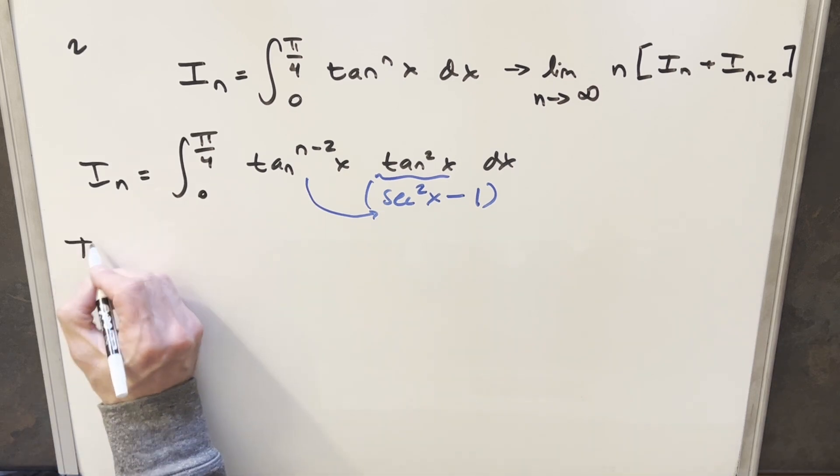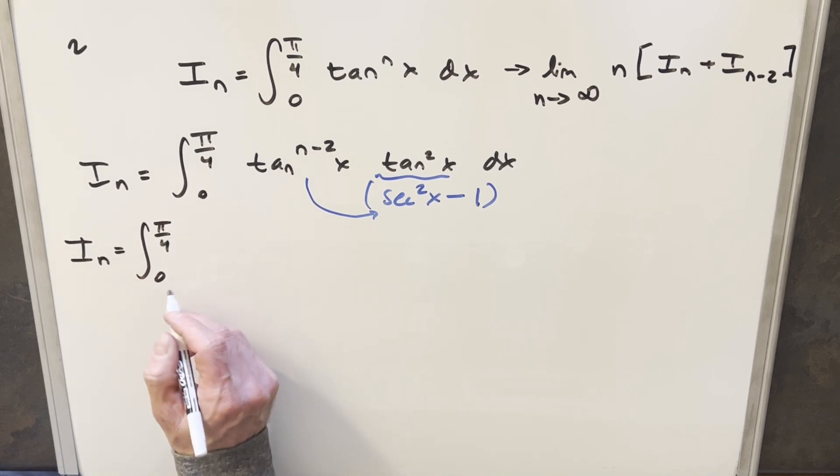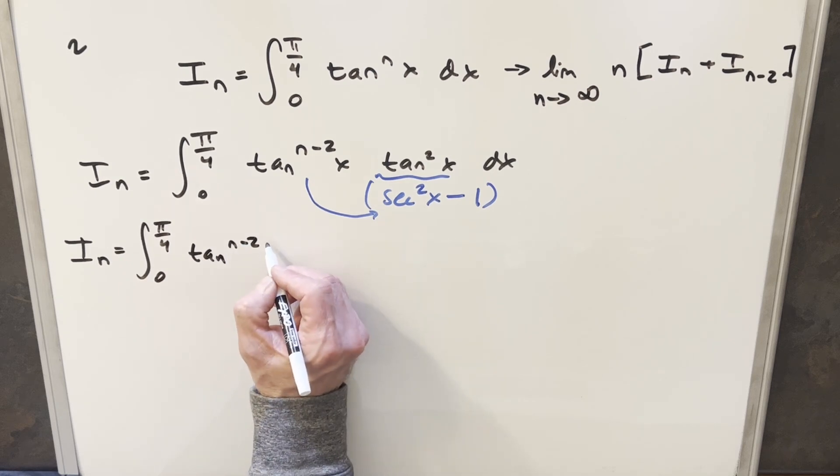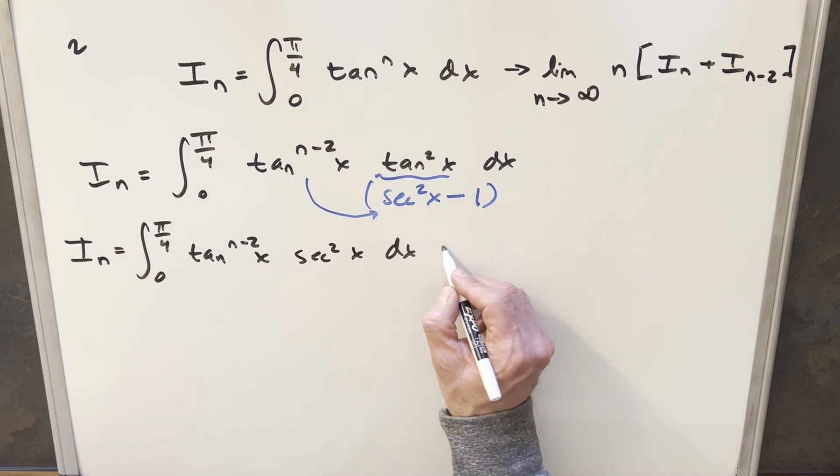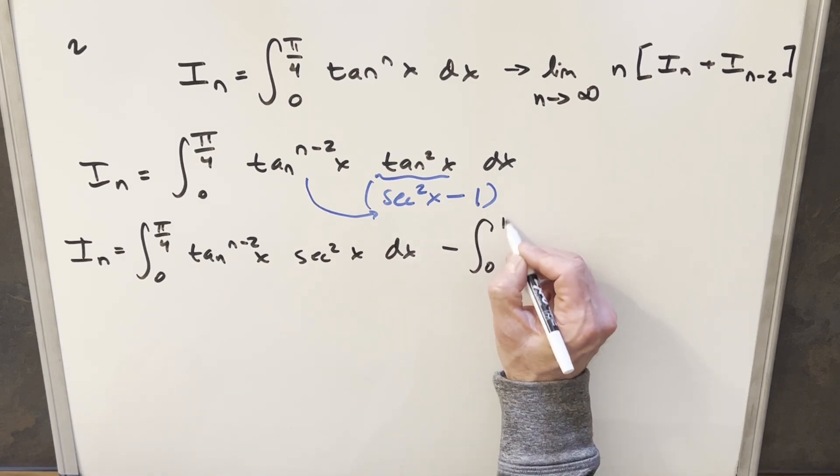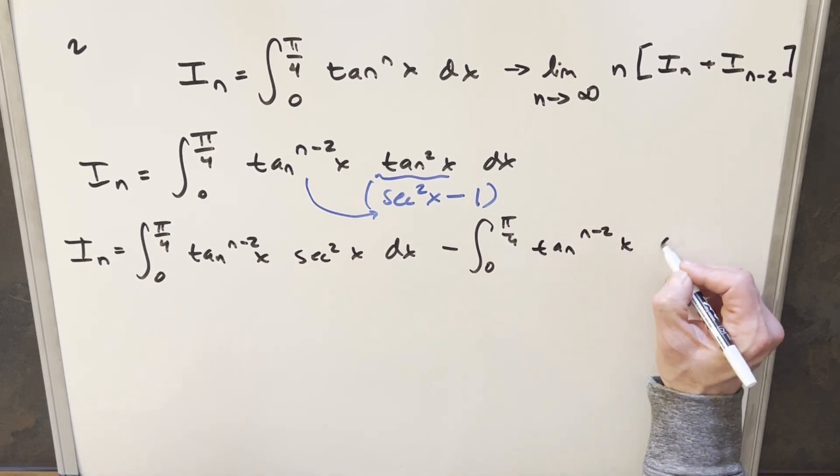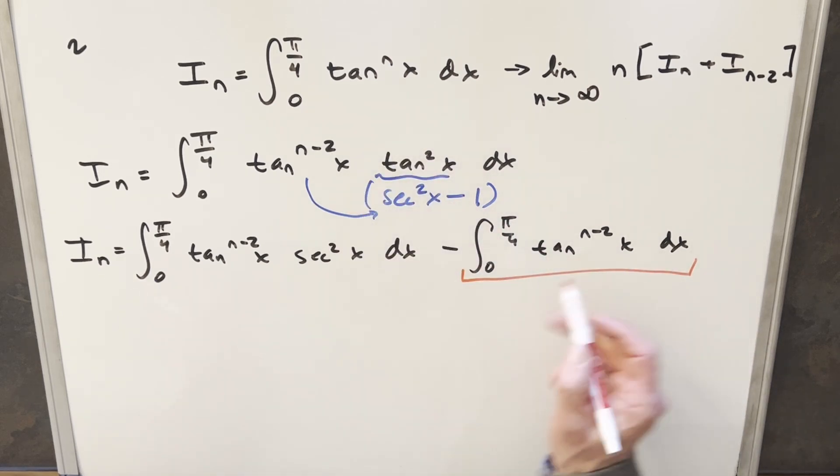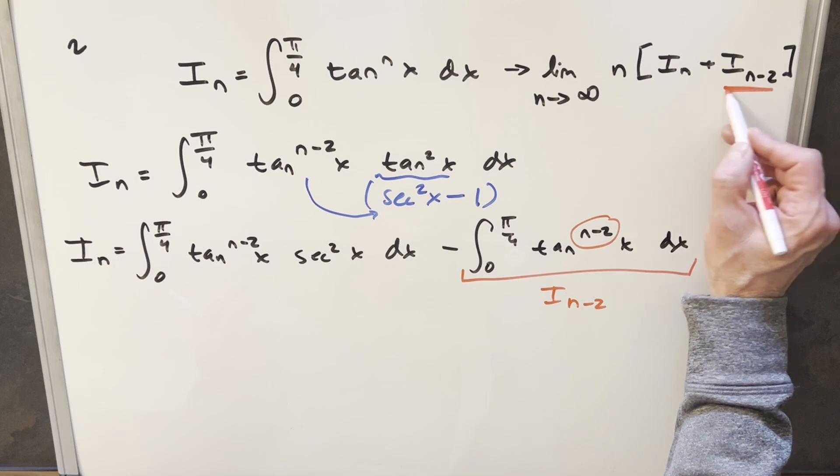So let's see how this is going to look. This whole thing is going to be I sub n. So for the first one, we're integrating from 0 to π/4. Then we're going to have tan n minus 2 of x times secant squared x. And then for the second one, let's just bring the minus sign out front. So we're going to have minus 0 to π/4, and then we're just going to have this tan n minus 2 of x. But the good news here is you'll notice this right here is basically like our original integral, but with just a different exponent. So this right here is actually going to be our I sub n minus 2, and that's going to help us out later because we need that over here. So let's just keep an eye on that.